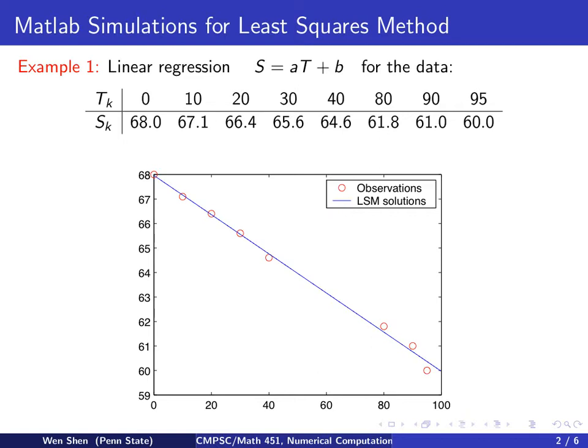So we observe that the least-square solution kind of goes through the data. Part of the data lies above and part of the data lies below. Some of them lie very close to the line. This is actually the general situation if you fit in a least-square method solution. Your curve or line will have to go through the data.